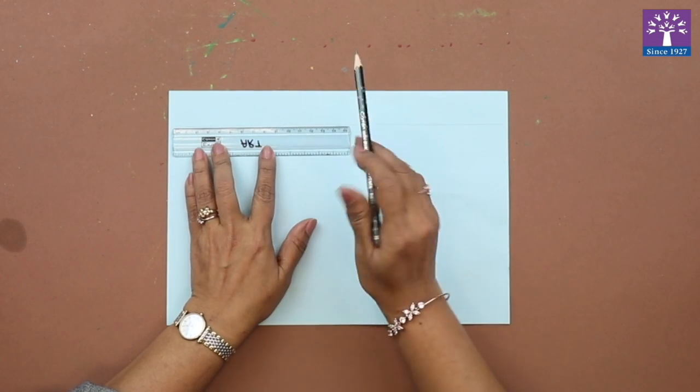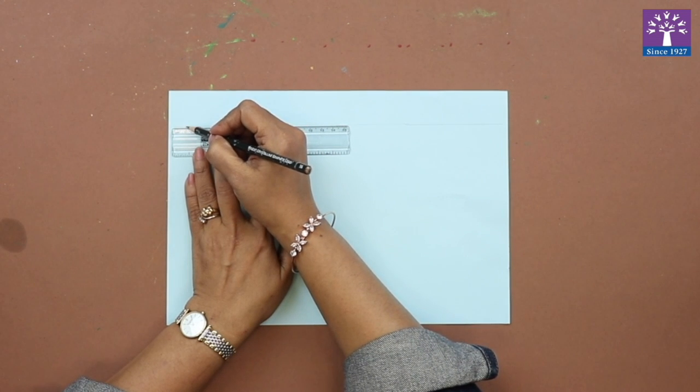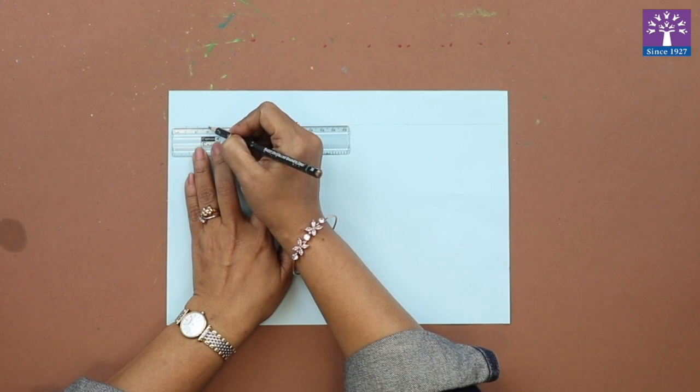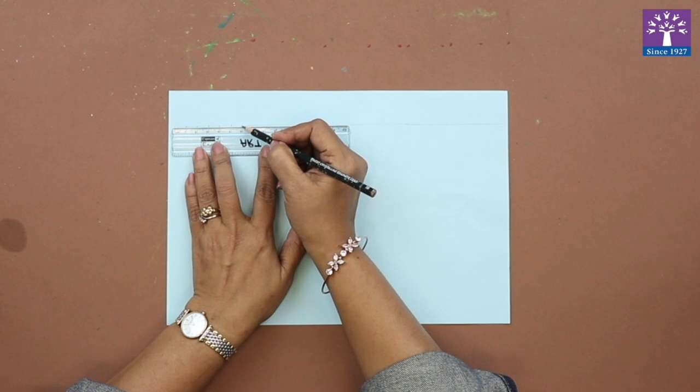So on these numbers we will mark a dot. These markings will help us to do the stitches.